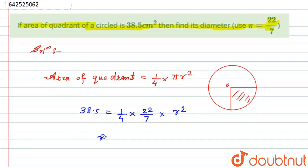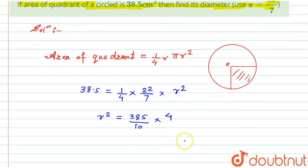Now I will take all the things to that side, so r² becomes equal to 38. I will multiply the upper side and lower side by 10, so it becomes 385 divided by 10. This 4 goes to that side, so we do multiplication.